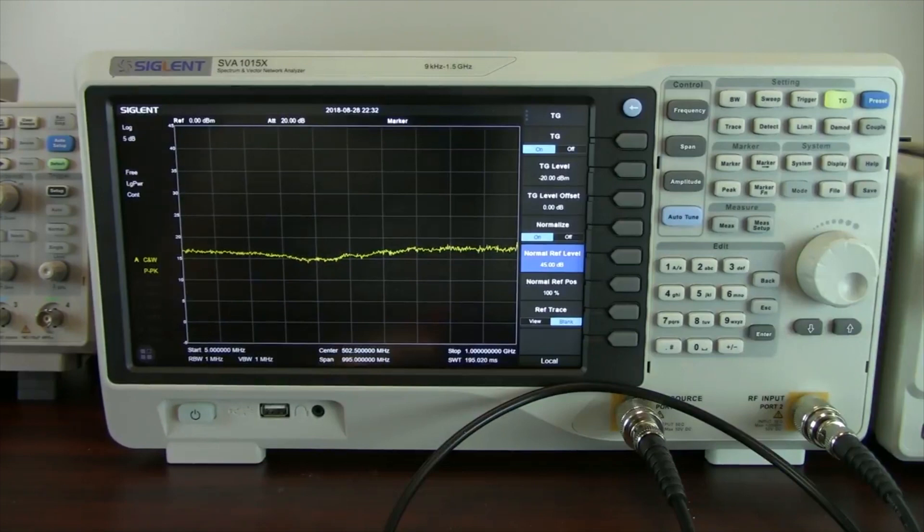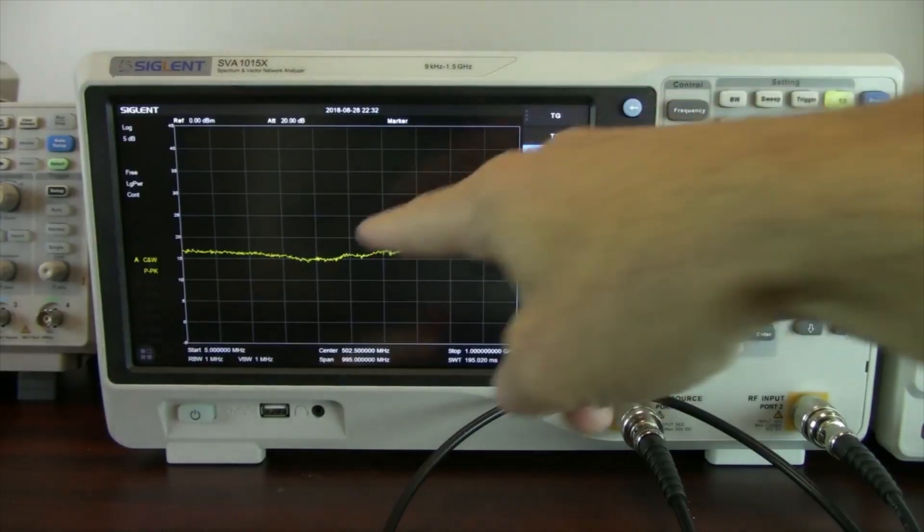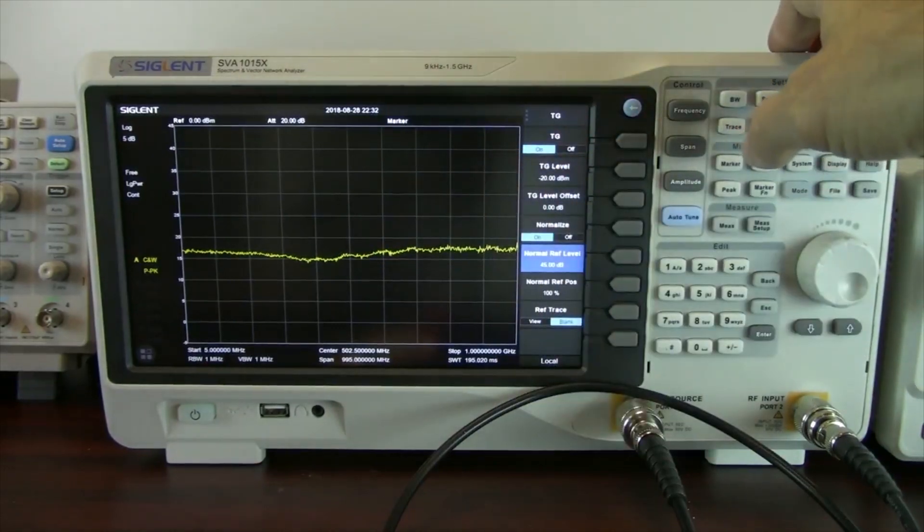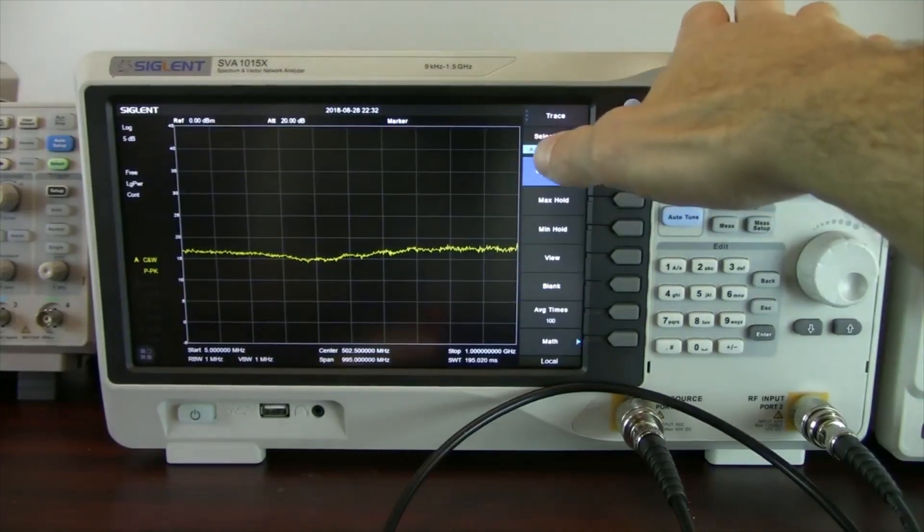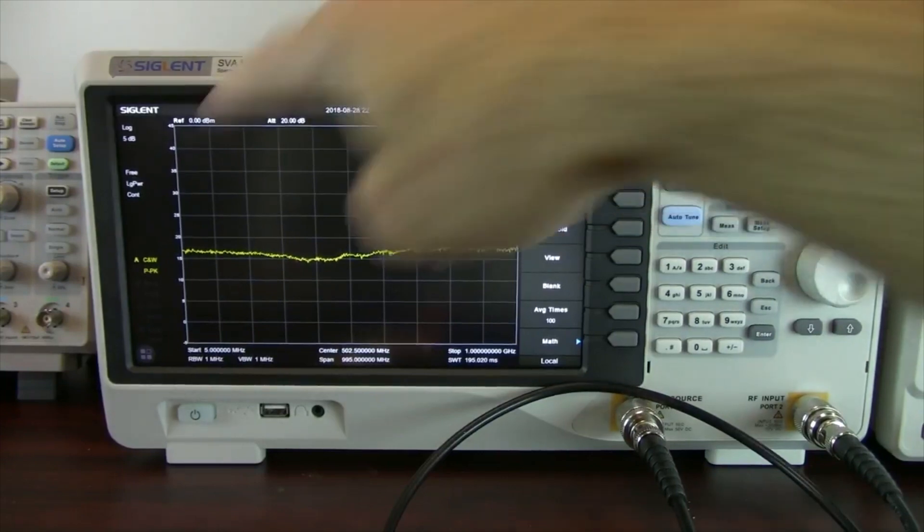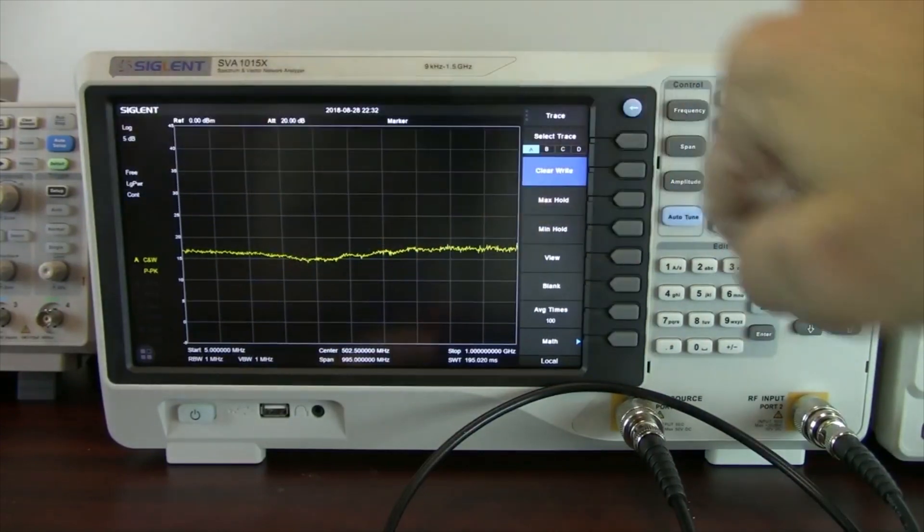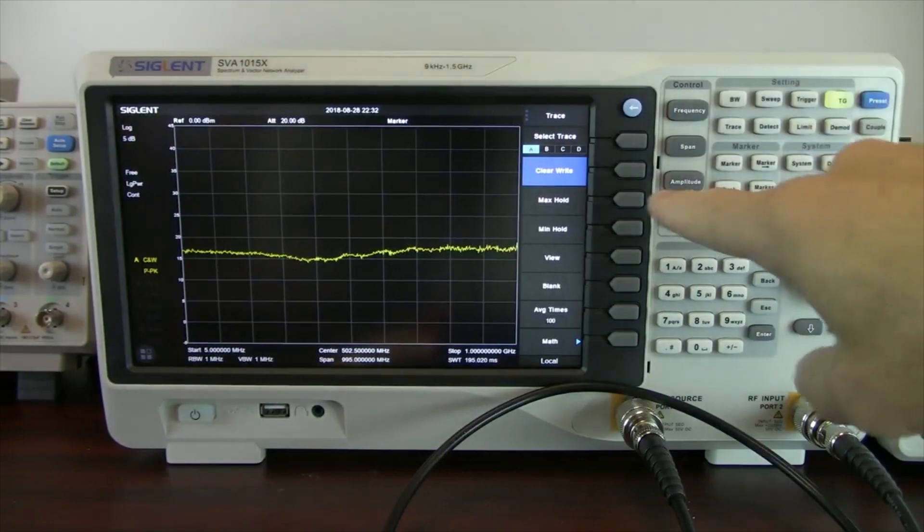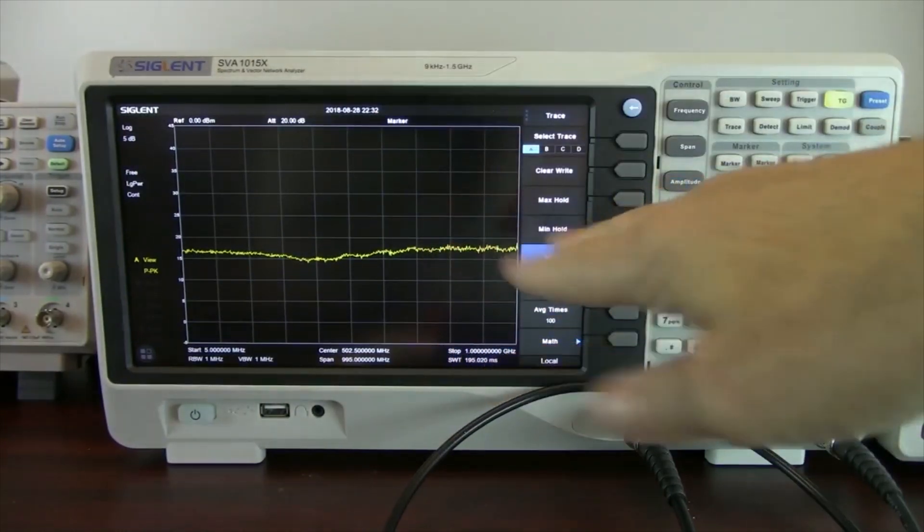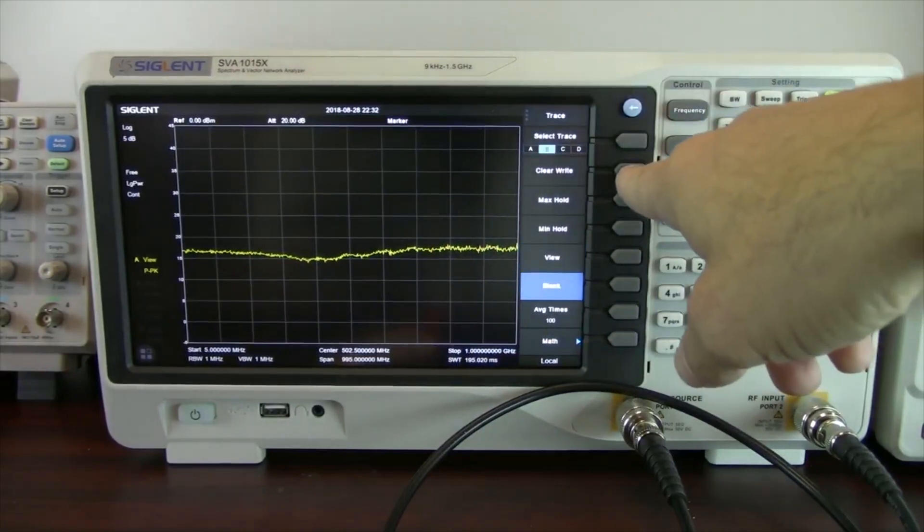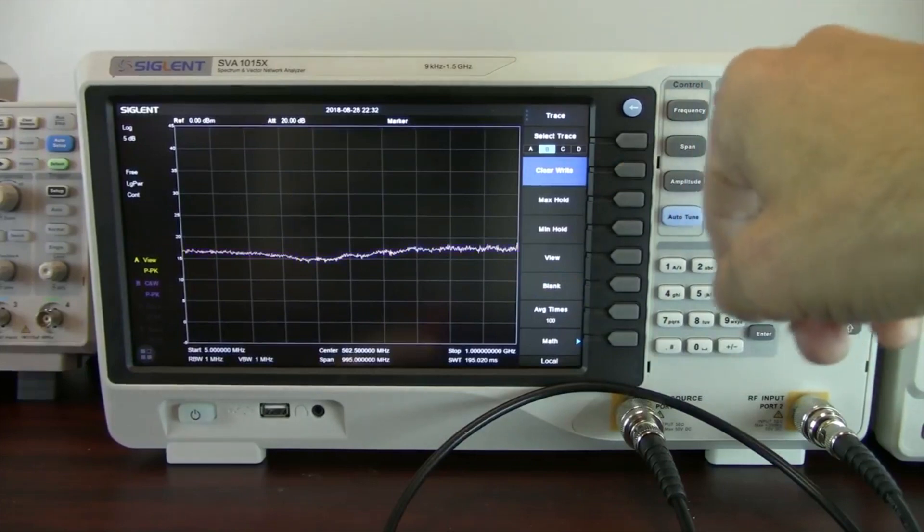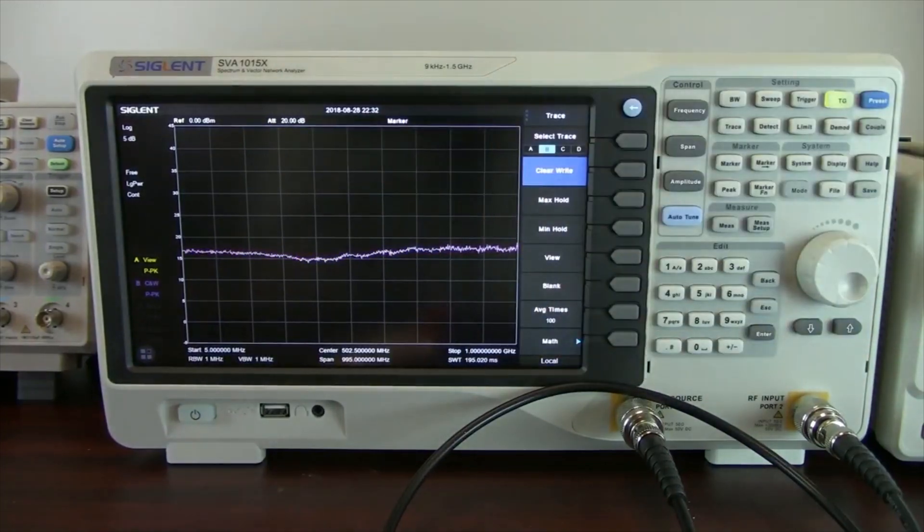Once we do a few more curves, what I'd like to do, this is the 12 volt setting, I'm going to freeze this on the display so that I can compare it to other measurements I'm about to make. I'm going to turn on the trace. This is trace A, the yellow trace, and you'll see that it's clear right. That means every successive pass is going to overwrite it. What we can do is press view. That's going to freeze it on the display. Now I can turn on a second trace, trace B, and we'll turn that on to clear right. Now you'll see a pink line up here.